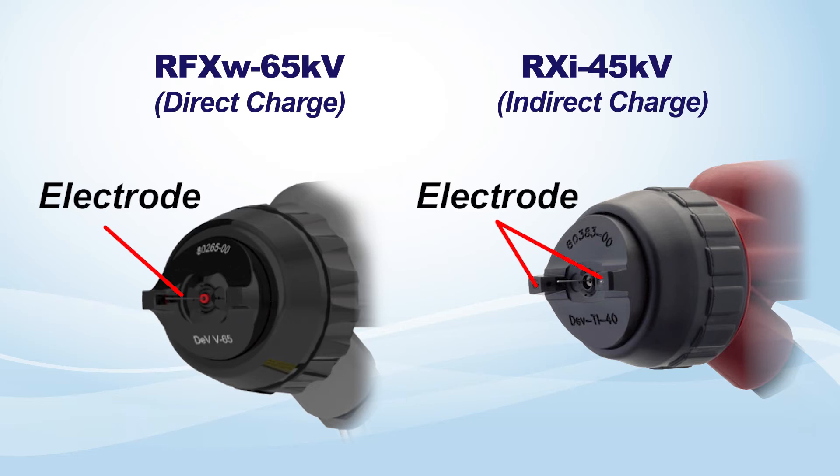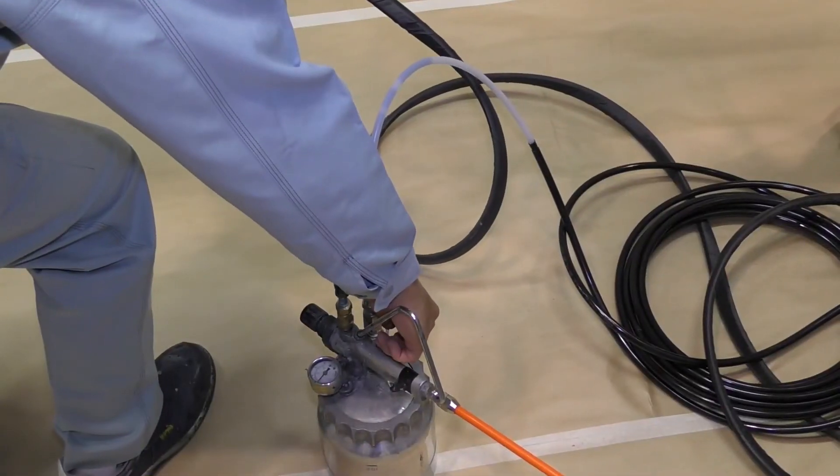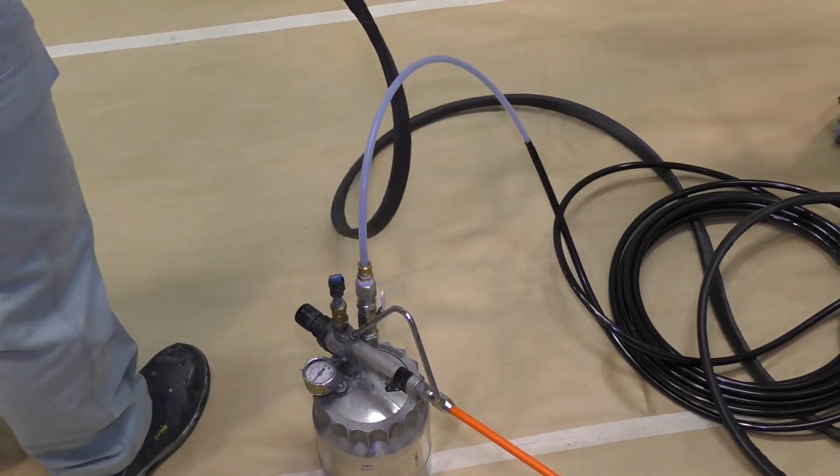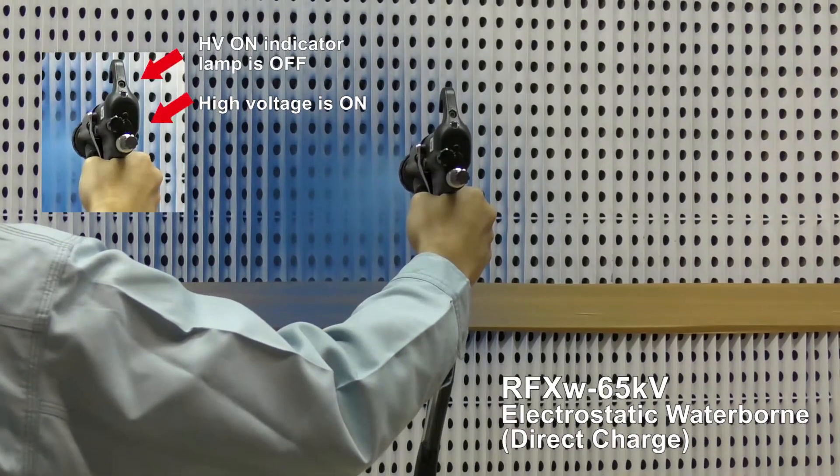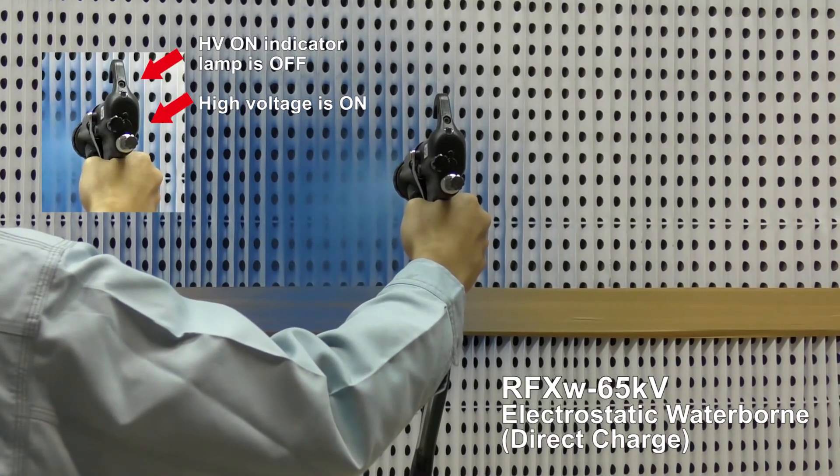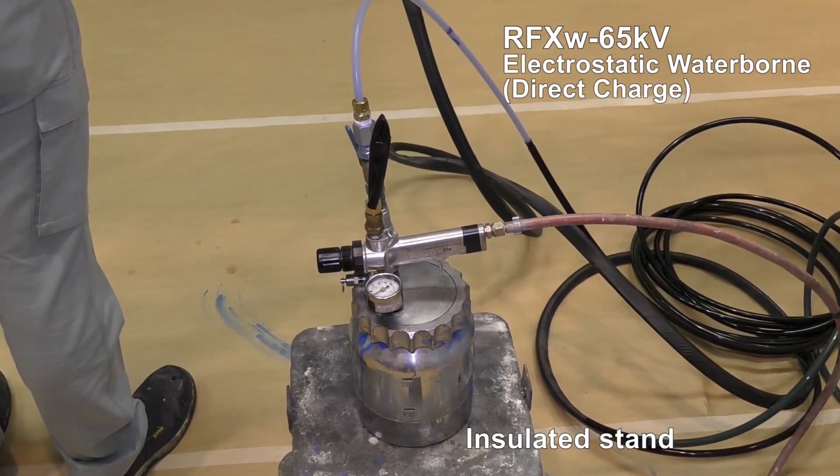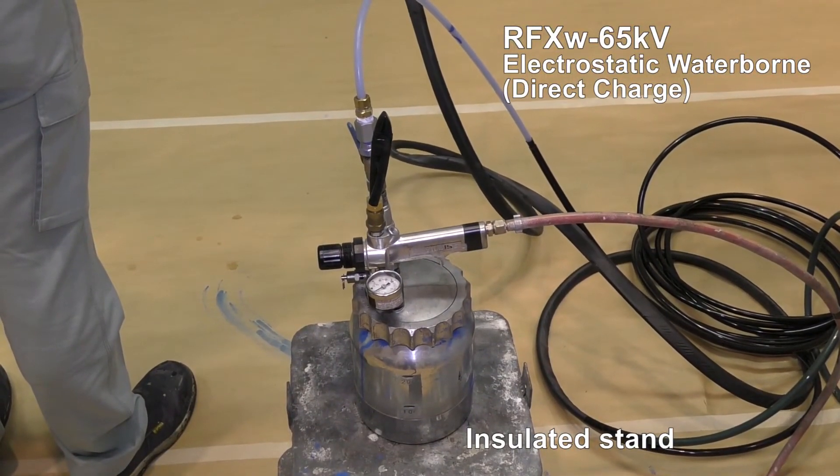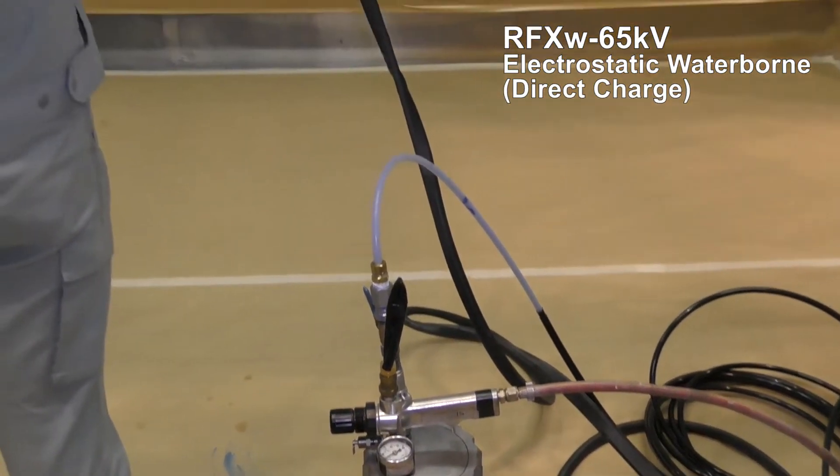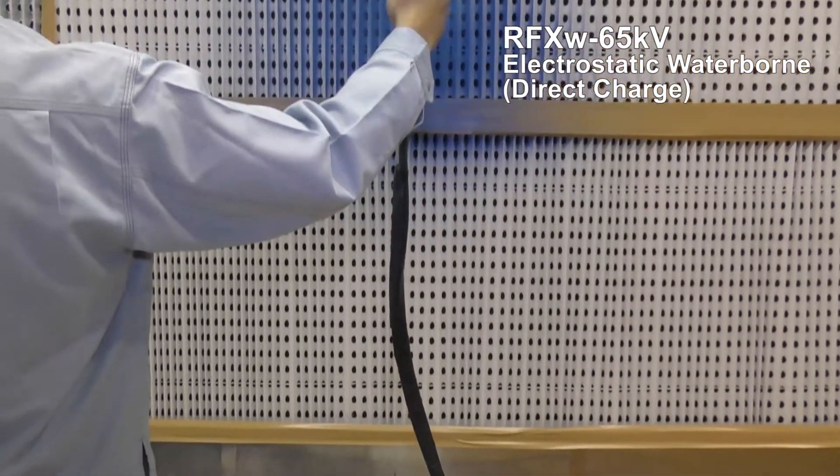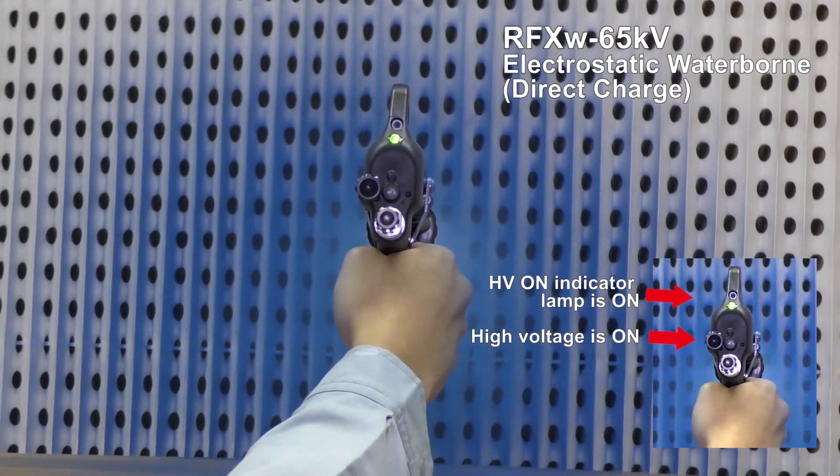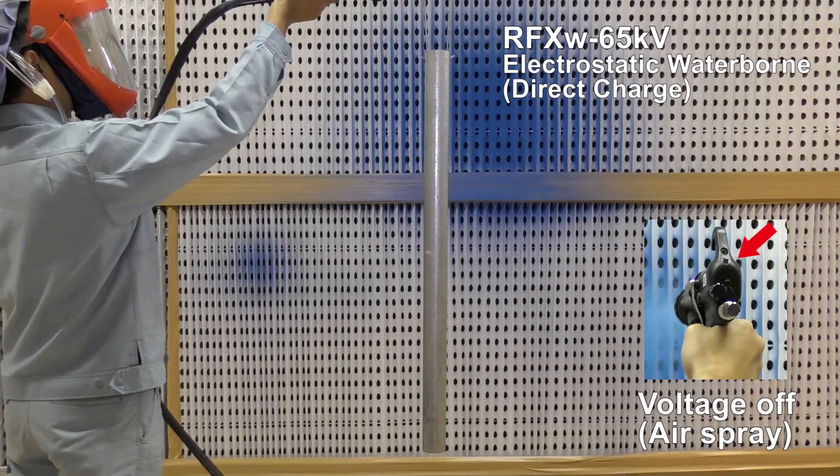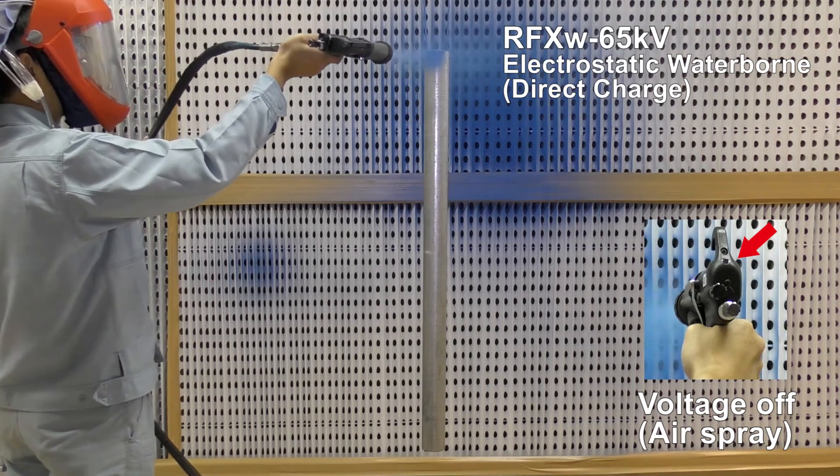The electrode of RFX double takes charge to material directly. It does not function when the paint supply is grounded. The green light is off. An insulated paint stand or similar insulated material must be used. Green light is on. Let's paint with RFX double.